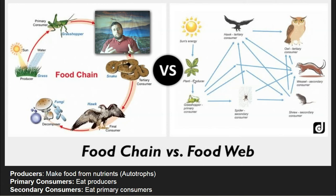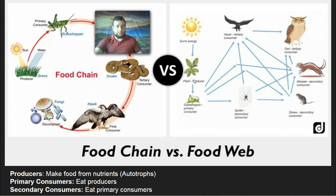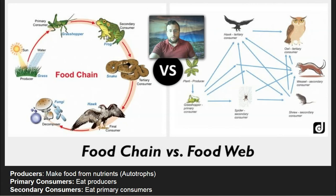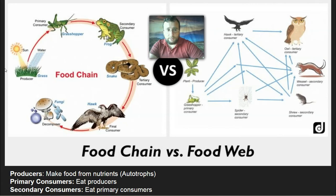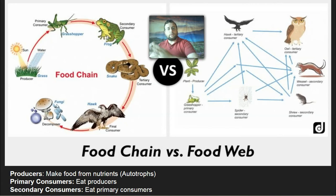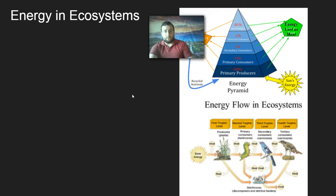One thing that also matters is decomposition. Decomposers eat from all across the food web — this diagram might make it look like only the last organism gets decomposed, but technically anything that dies, including the plants themselves, can get decomposed. Their role is basically to cycle nutrients back.